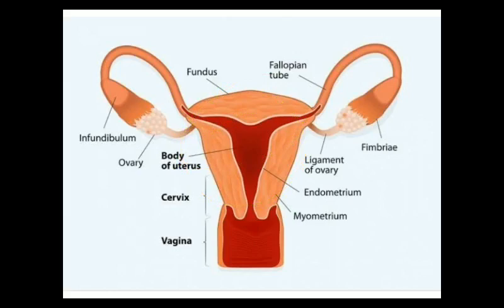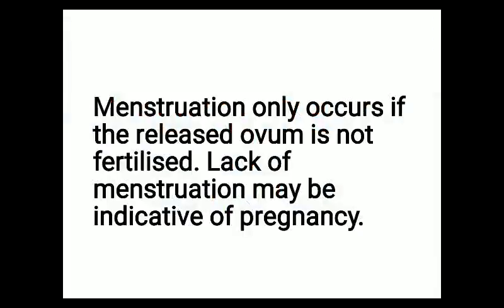Looking at the diagram of the human female reproductive system, the inner lining of the uterus is known as the endometrium. This endometrium becomes spongy and thick and gets richly supplied with blood vessels. During the menstrual phase, this inner layer is shed and comes out from the vagina as menstrual outflow. Menstruation only occurs if the released ovum is not fertilized.